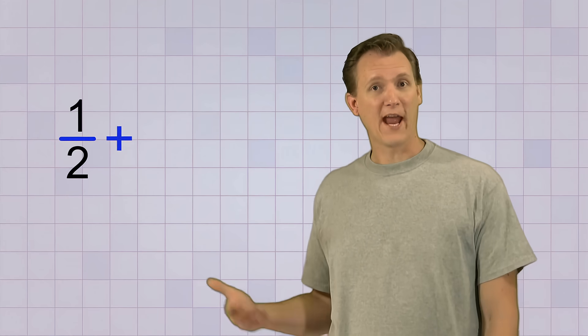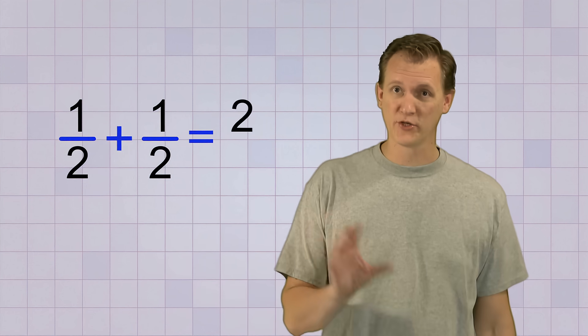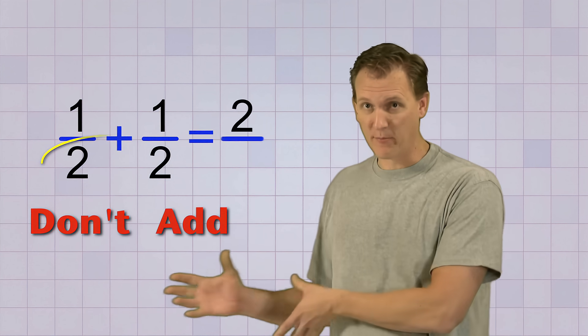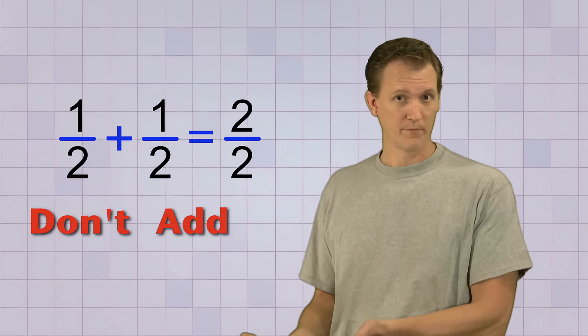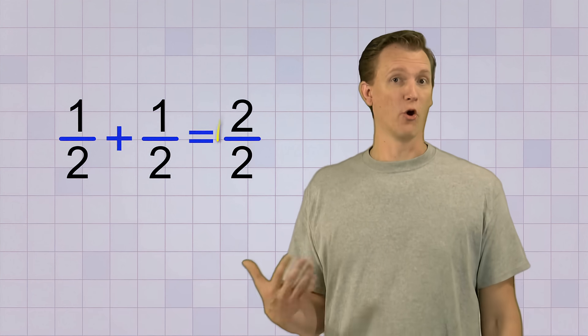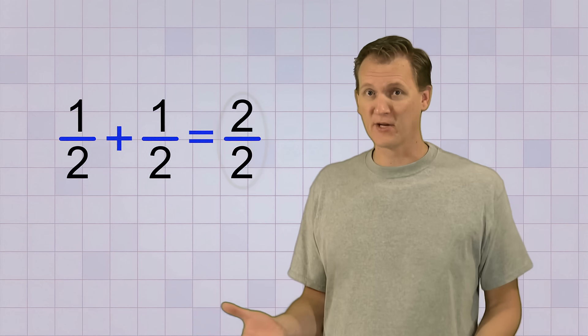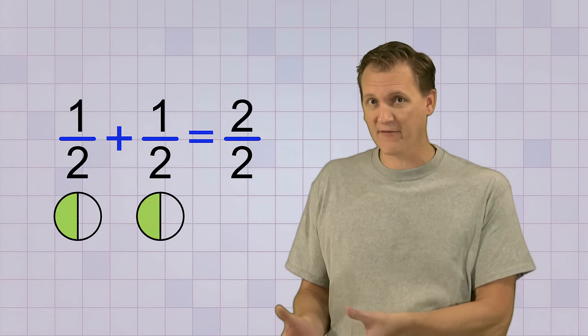For example, to add 1 half and 1 half, we just add the top numbers, and 1 plus 1 gives us 2. But we don't add the bottom numbers. We just use the same bottom number in the answer, which is 2. So 2 over 2 is a whole fraction. And that makes sense, because if you add 1 half and 1 half, you get a whole.